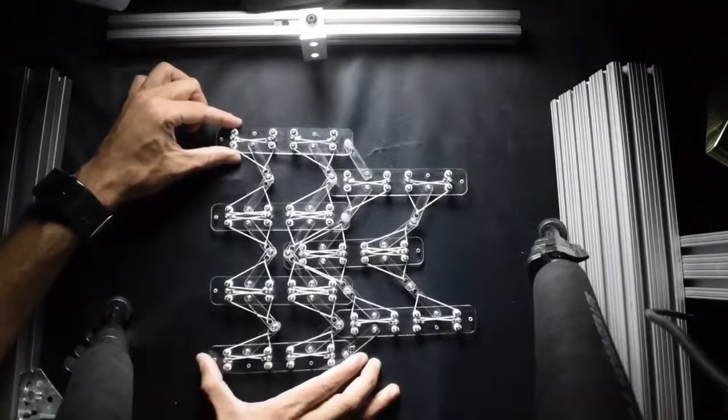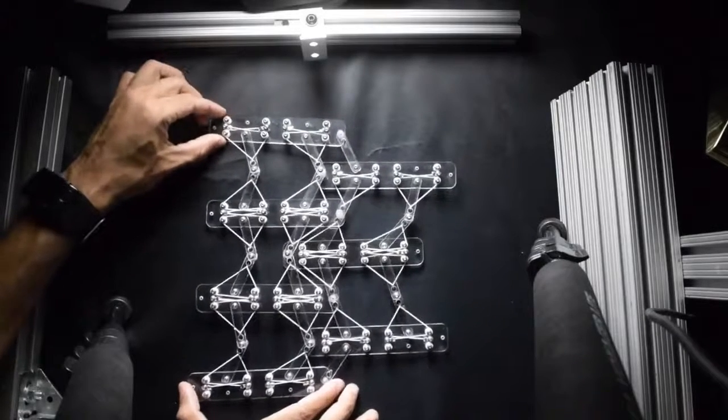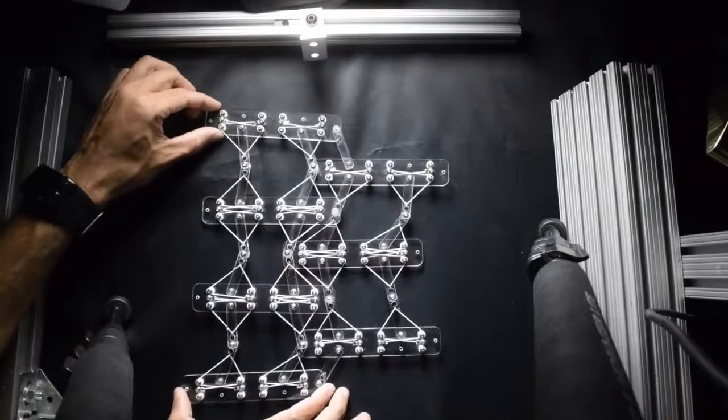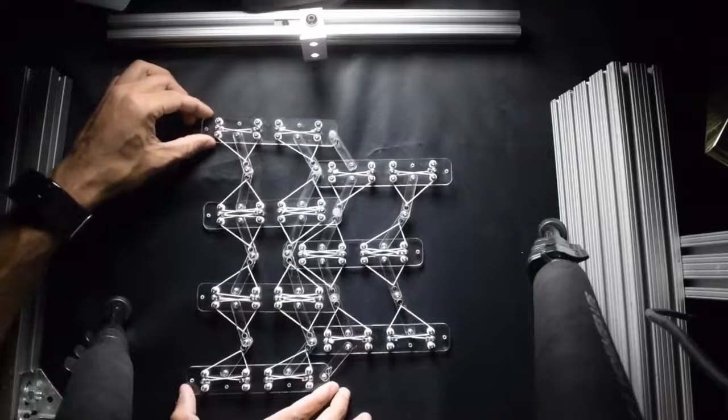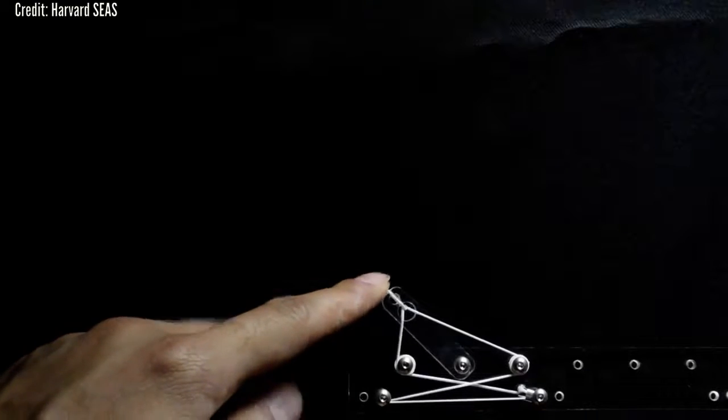Rigidity helps lock the material into place, but if it is too rigid, it can't take on new shapes. The team started with a neutrally stable unit cell with two rigid elements – a stud and a lever – and two stretchable elastic springs.